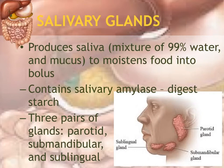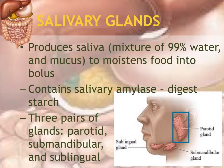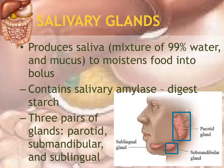Saliva also contains an enzyme called salivary amylase, whose job is to digest starch — a carbohydrate found in crackers, bread, potatoes, and corn. There are three pairs of salivary glands: the parotid, located on the sides of the cheek (the main salivary gland); the submandibular, located under the jaw; and the sublingual, located underneath the tongue.